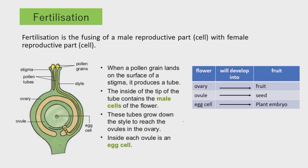Let's see how they develop. Look at this table: the ovaries develop into fruit, the ovules develop into seeds, and the egg cells develop into the plant embryo.